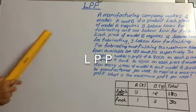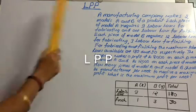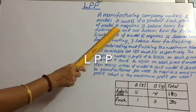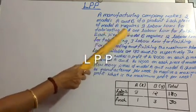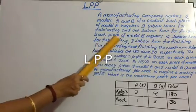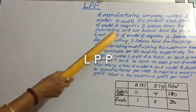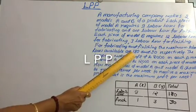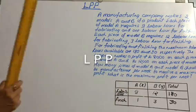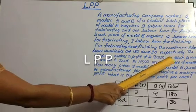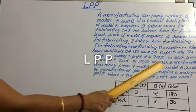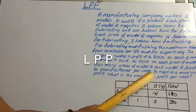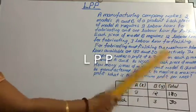Today let us consider problems on linear programming. A manufacturing company makes two models A and B of a product. Each piece of model A requires 9 labor hours for fabricating and 1 labor hour for finishing. Each piece of model B requires 12 labor hours for fabricating and 3 labor hours for finishing. The maximum labor hours available for fabricating and finishing are 180 and 30 respectively. The company makes a profit of Rs. 8,000 on each piece of model A and Rs. 12,000 on each piece of model B. How many pieces of model A and model B should be manufactured per week to realize maximum profit, and what is the maximum profit per week?